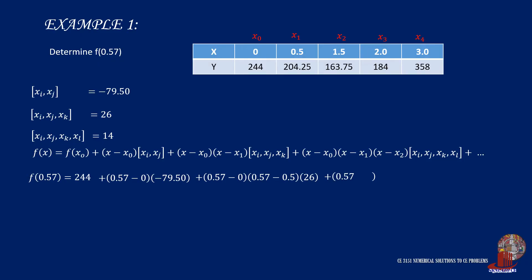Lastly, add x minus x2 in the term, so it becomes 0.57 minus 0, multiplied by 0.57 minus 0.5, and again with 0.57 less 1.5, and 14. Compute the terms and simplify to have f of 0.57 as 199.2029.